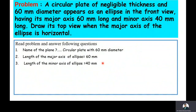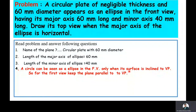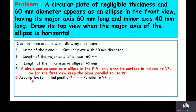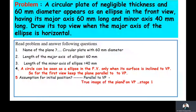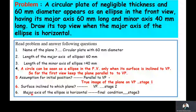For the initial position of the plate: a circle can be seen as an ellipse in the front view only when its surface is inclined to VP. So for the first stage, keep the plane parallel to VP — that is, the circular plane is assumed to be parallel to VP so the true image falls onto the vertical plane. Second stage considers the surface inclination to VP. Third stage is keeping the major axis of the ellipse horizontal.